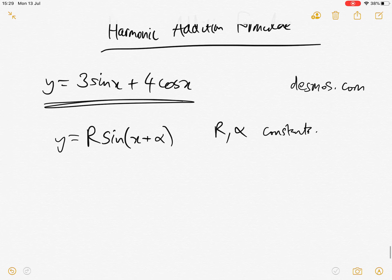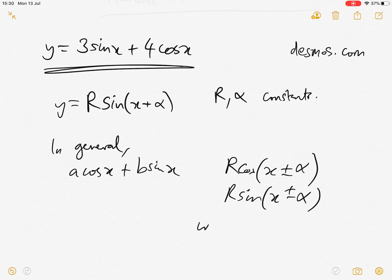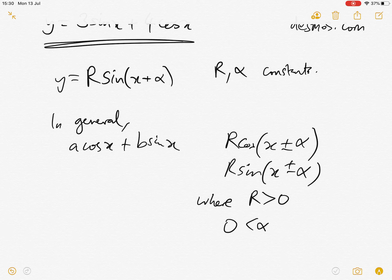So in general, the expressions of the form a cos x plus b sin x can be written, where a and b could be positive or negative or whatever, in the form r cos x plus or minus some number alpha, and r sin. Actually, if I make it plus or minus, then I can say where r is positive and alpha is between 0 and pi by 2.